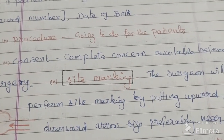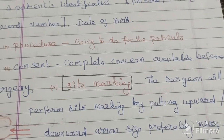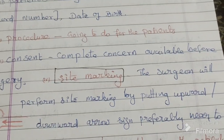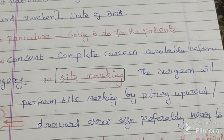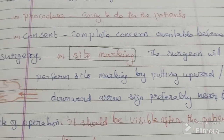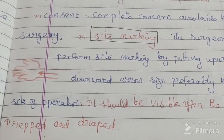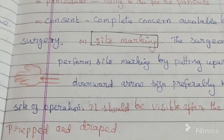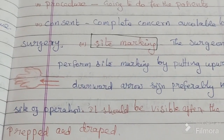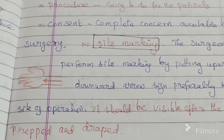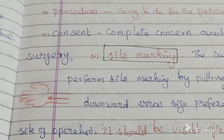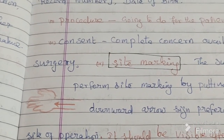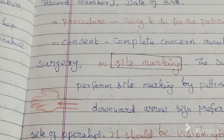The last item in pre-operative verification is site marking. Site marking needs to be done by the surgeon who is going to perform the surgery, by putting upward and downward arrows near the site of operation. It should be visible even after the patient is prepped and draped. In this diagram, you can clearly see the arrow mark. This may vary from hospital to hospital based on policy and protocols.